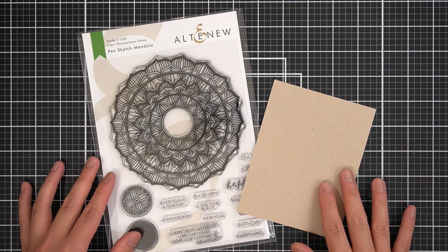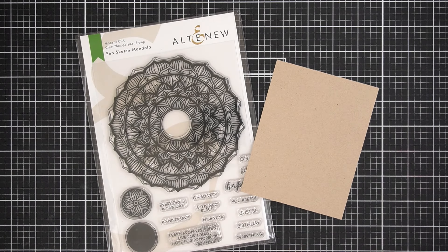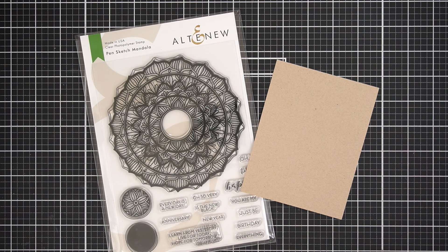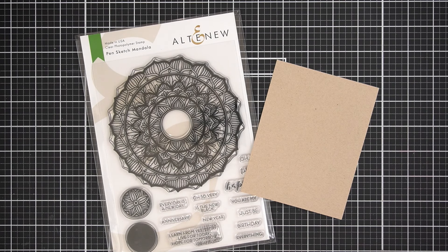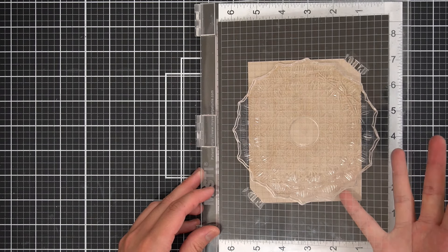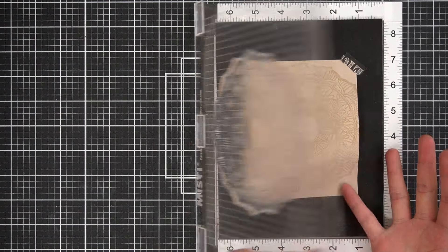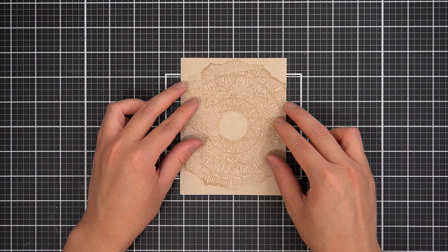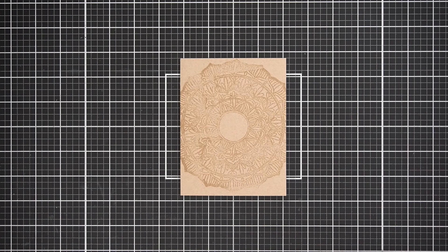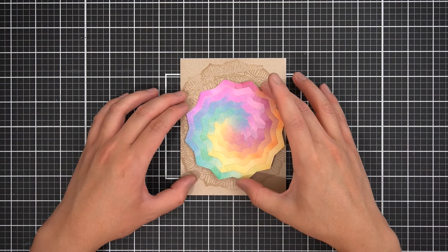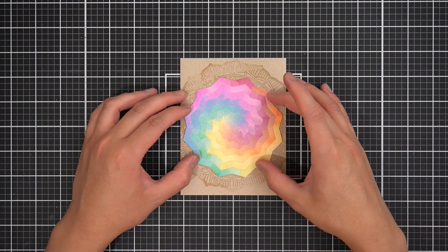I'll quickly show you all how I finished my cards. Up first, I'm taking the large pen sketch mandala stamp set from Altenew and I'll center and stamp the largest image on some craft cardstock using a watermark ink. I went for a tone on tone. I didn't want to introduce new colors since I already covered all of them on the rainbow tie-dye. Then I'll center and glue down the rainbow tie-dye onto my craft cardstock card front.